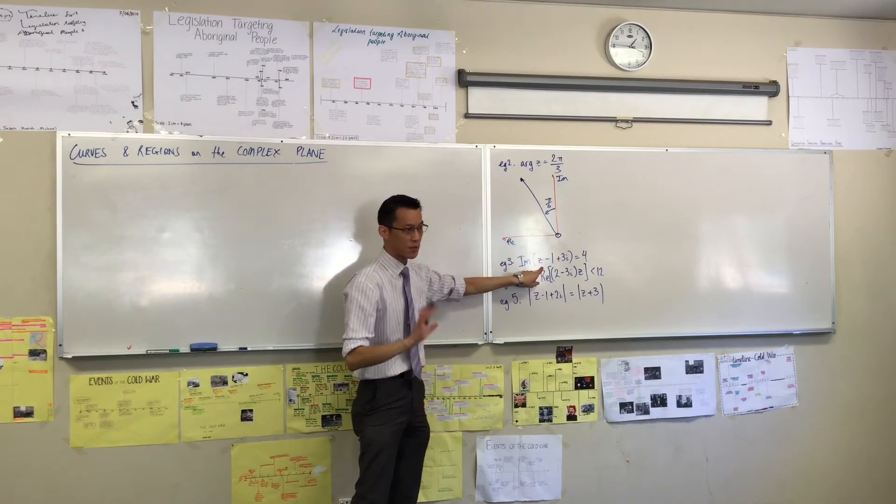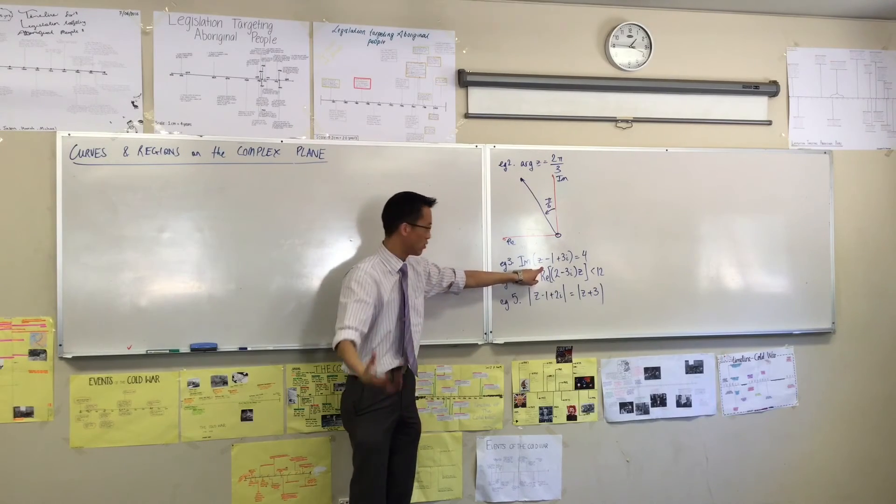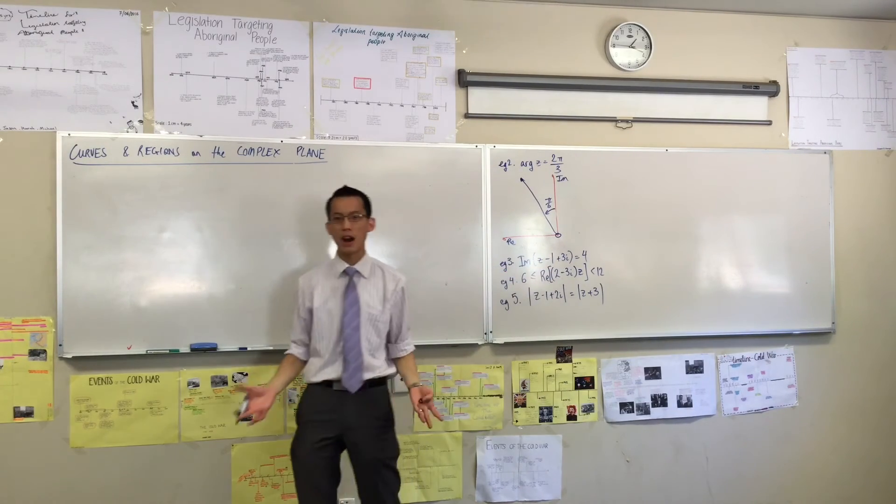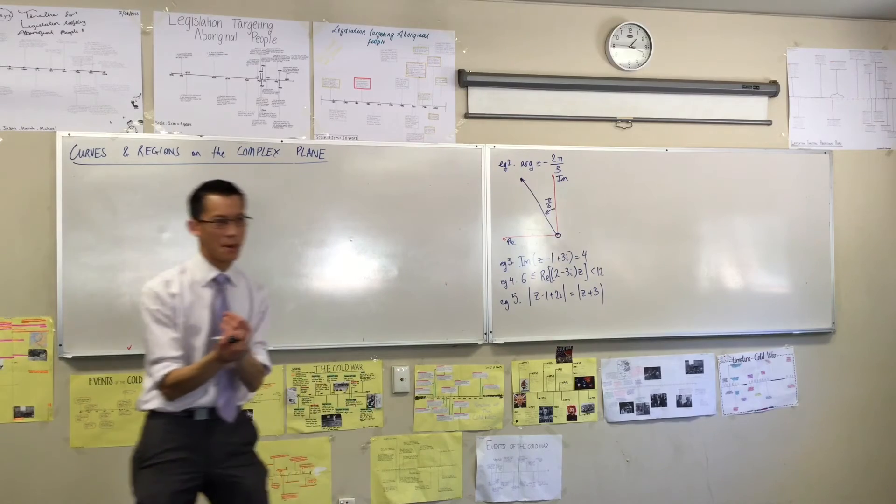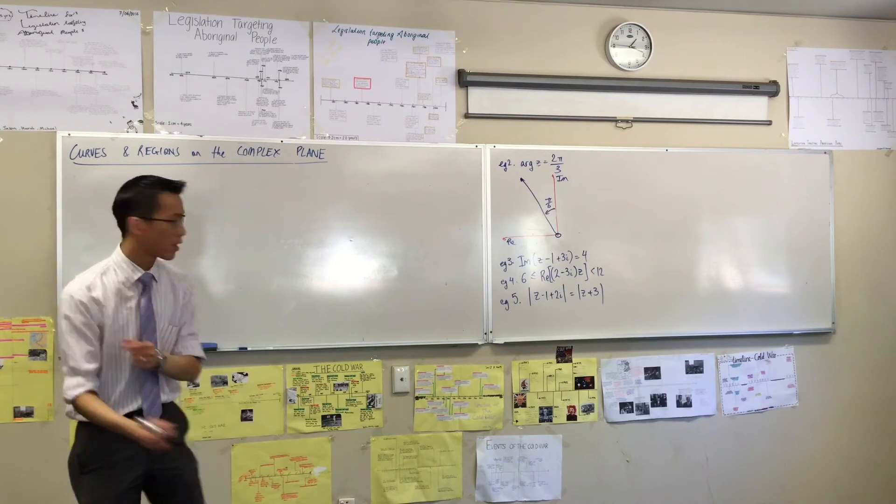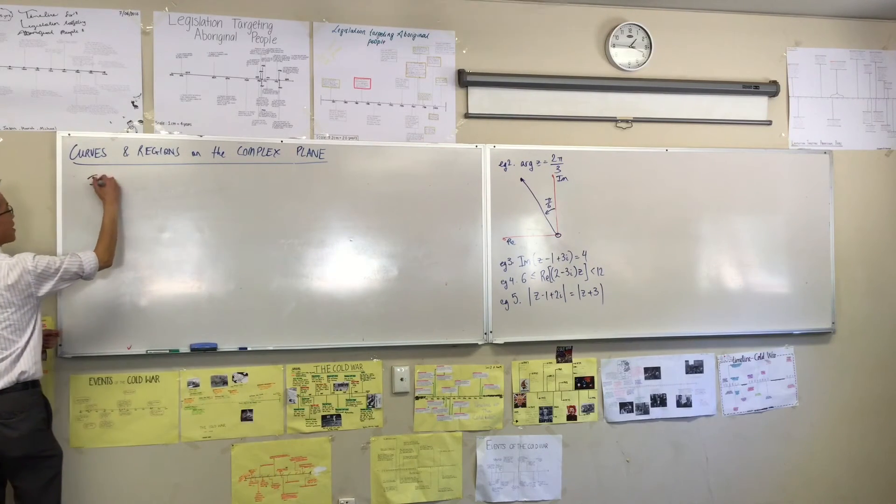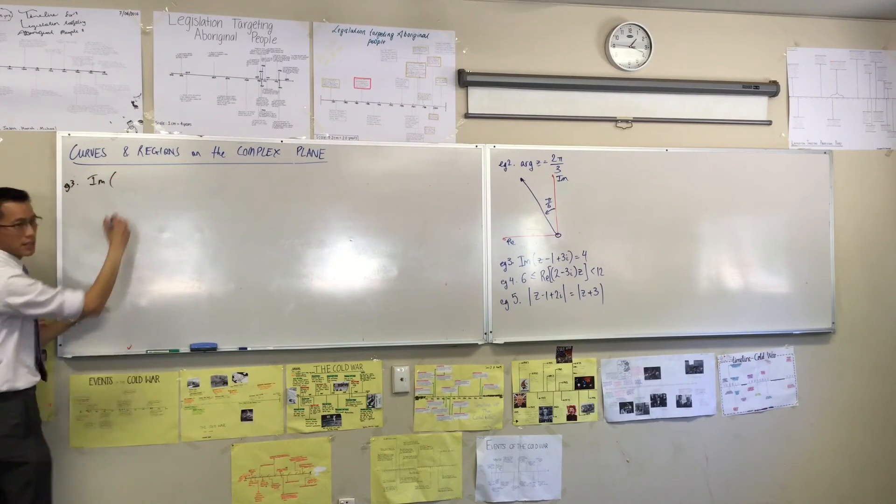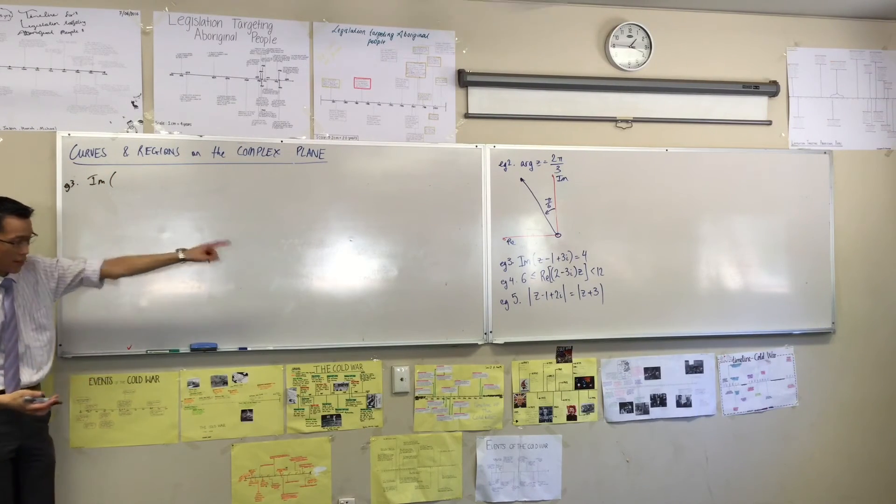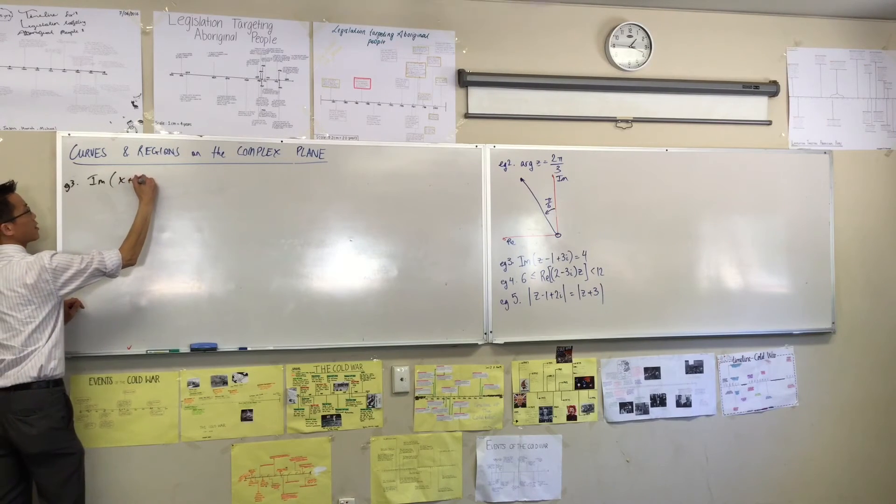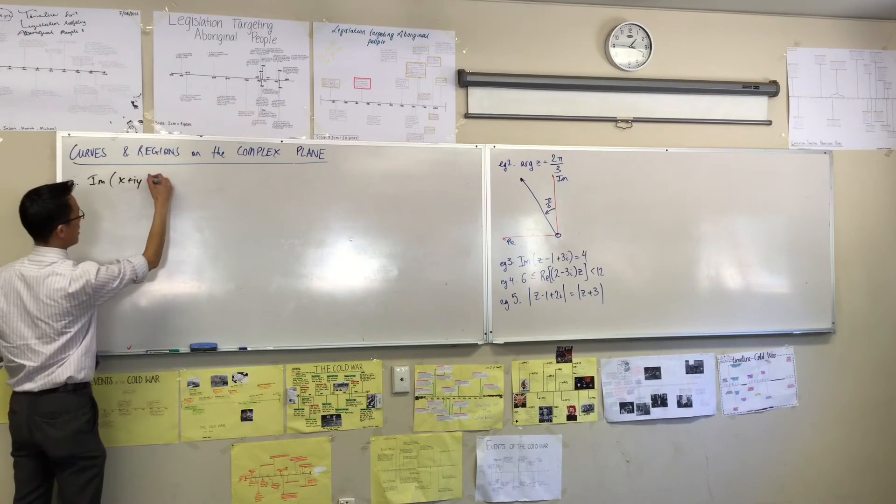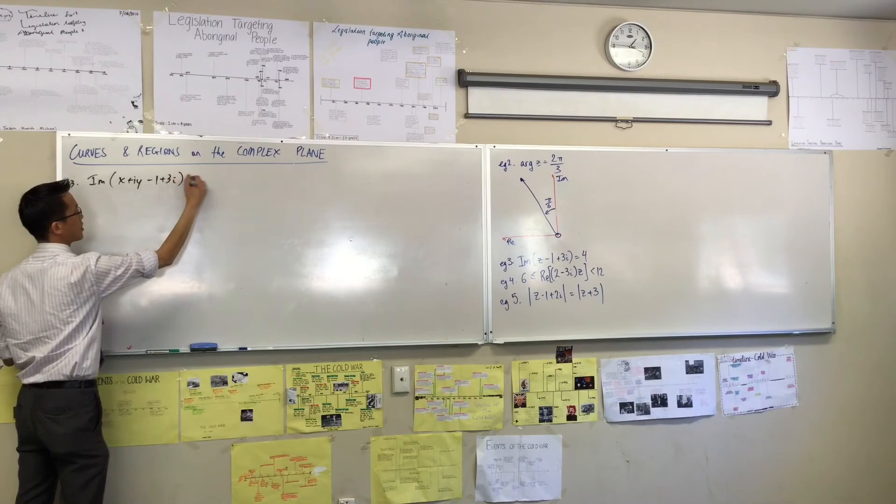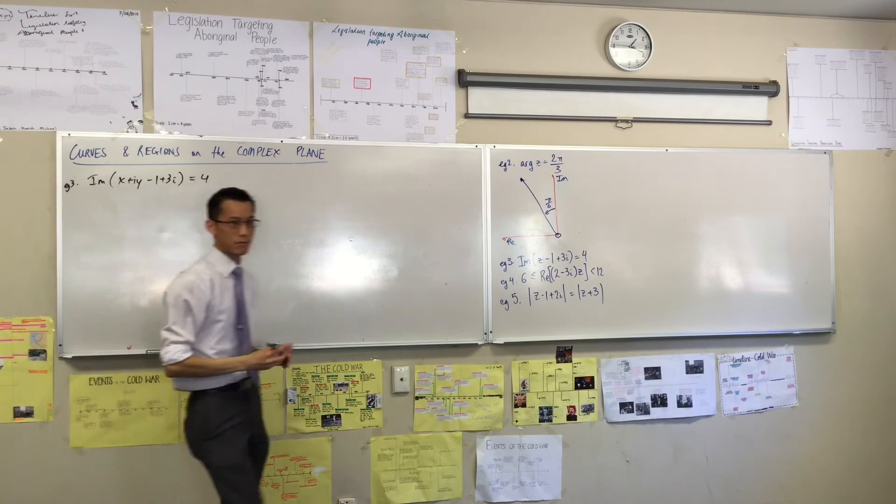This z, I'm just going to replace. Here's just a general technique you can use. I can always replace that with x + iy. I haven't violated the number, I've just written it in a different way. So if I write the imaginary part, this is number 3, of that, but this time I'm going to write x + iy instead of the z. Is x + iy, what have I got? Minus 1 plus 3i. Apparently that's 4.